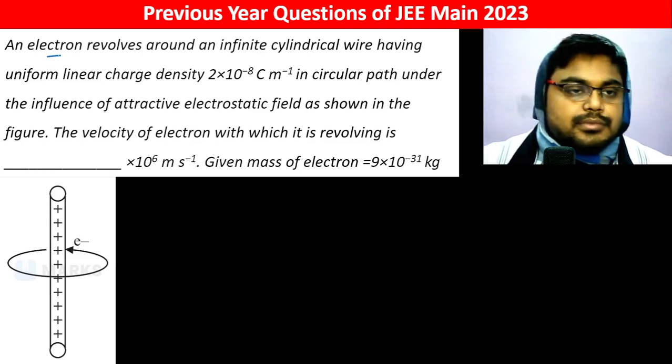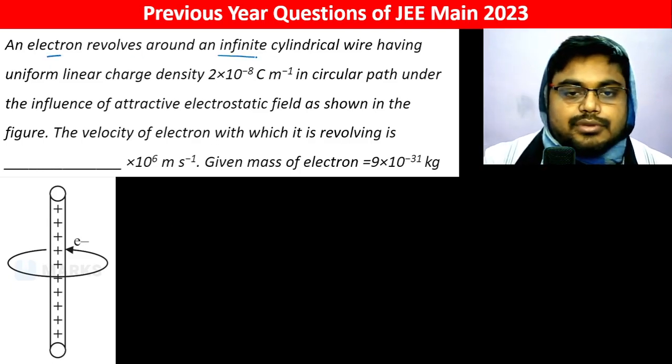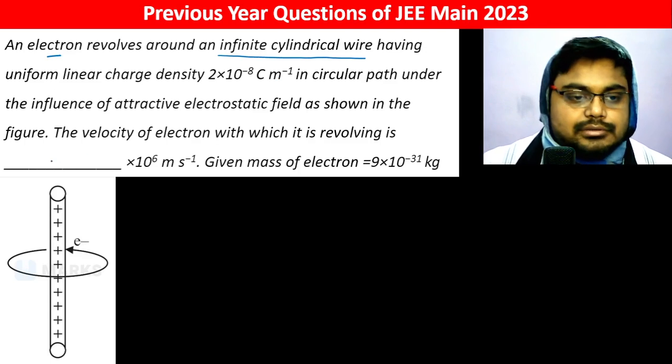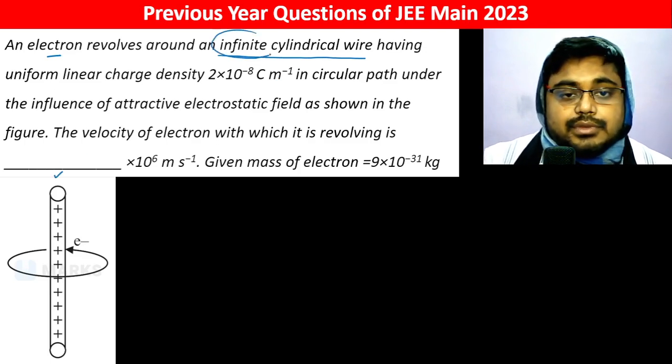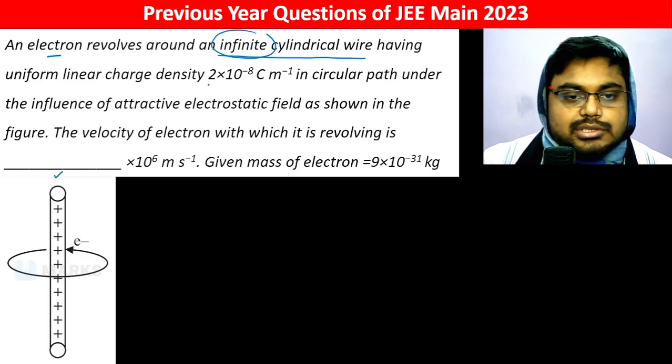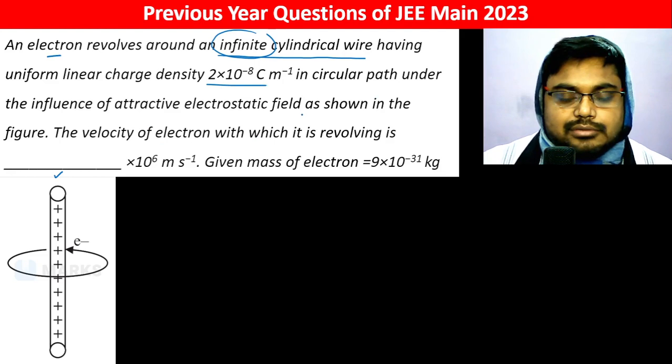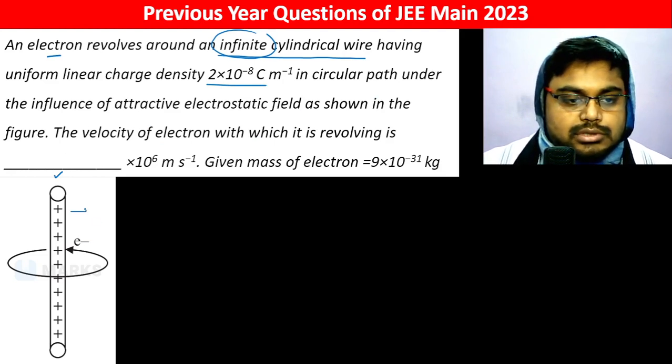An electron revolves around an infinite cylindrical wire having uniform linear charge density 2×10⁻⁸ C/m in a circular path under the influence of attractive electrostatic field as shown in the figure.